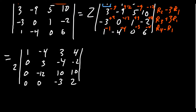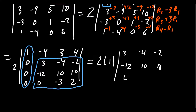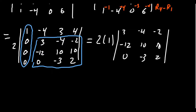Another option is to cofactor expand along the first column, since we have all these zeros. By the cofactor expansion across the first column, you get 2 times 1 times the minor: [3, −4, −2 / −12, 10, 10 / 0, −3, 2]. When you multiply 1 by this minor you get this term, and when you multiply 0 by all the other minors, they disappear. So 2 times 1 is just 2 out in front, and we can drop the first row once we have the pivot position.